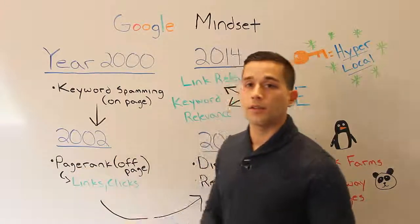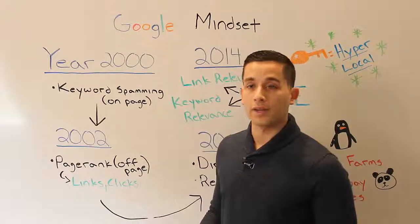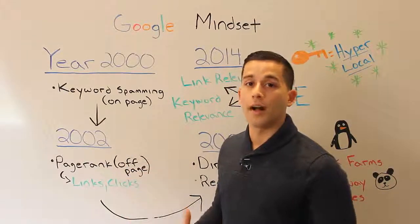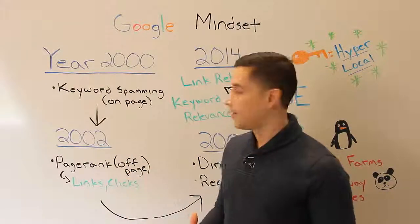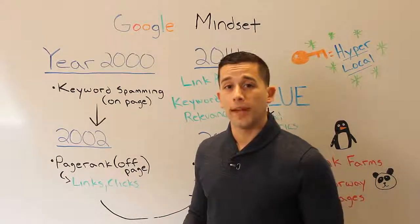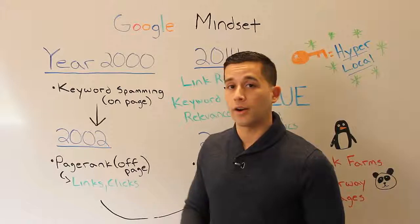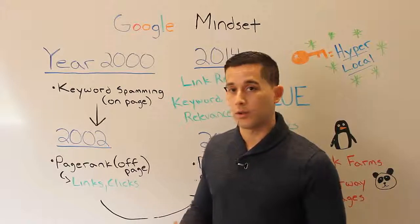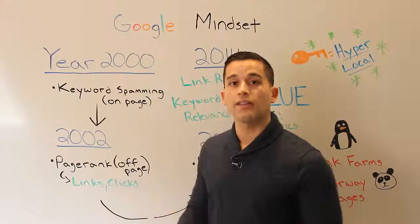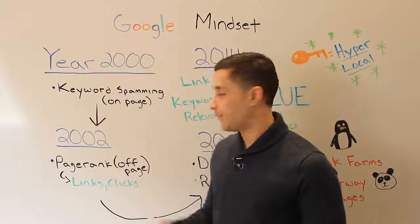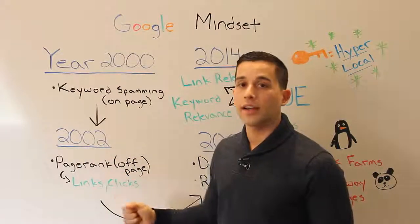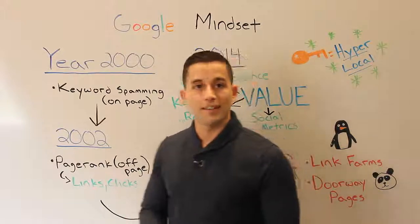Moving along to 2002, that's the first time you start to see PageRank, which is still a huge factor in Google's algorithm, although it's evolved a lot. PageRank is basically the first time Google starts to look at off-page factors when determining how to rank your site — specifically links and clicks. Links were seen as votes of confidence for your site; if Google saw ten links from other websites to yours, it couldn't be a bad site.